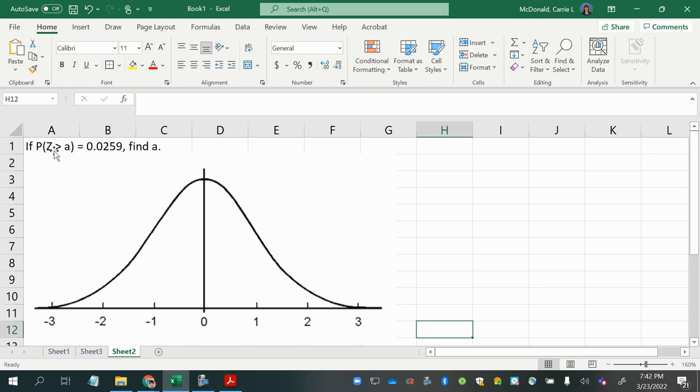All right, so we're talking about looking for a Z-score that is greater than some value A, or not a Z-score, but we want to know what the boundary A is because we're interested in the probability of values that are greater than A. And we're talking about Z-scores, so that means we know that the mean is 0 and the standard deviation is 1, so this is a standard normal distribution.